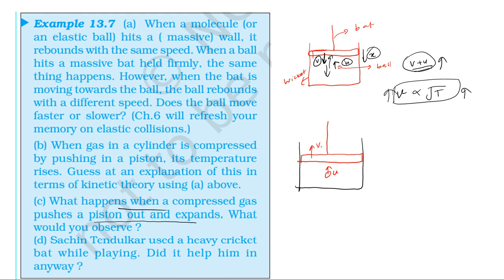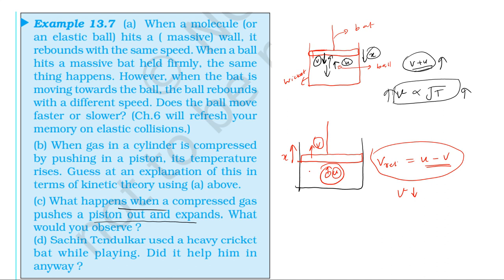The relative speed of the molecule with respect to the piston is u minus v when the piston moves away — that is, when the gas expands. The velocity of the molecule after collision with the receding piston is u minus v. When the piston moves away such that the gas expands, the resultant velocity of the molecule decreases, and therefore the temperature decreases.